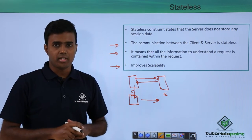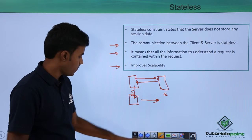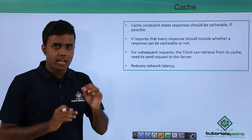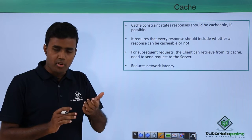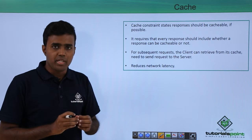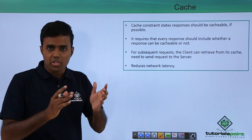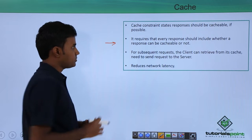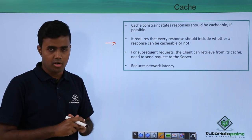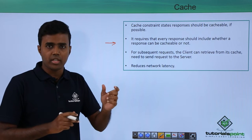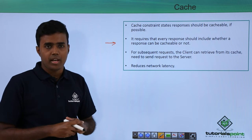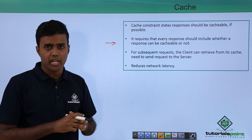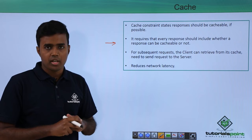The next constraint is the cache constraint. It states that when a server sends a response to the client, the response should indicate whether it can be cached and for how long it can be cached at the client side. If a response is cacheable, the client will cache that response in its own system, and because of this, it need not send additional requests to the server to fetch the same data, which improves network optimization.